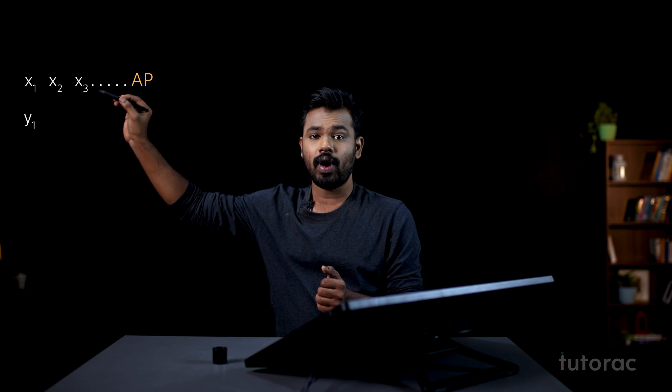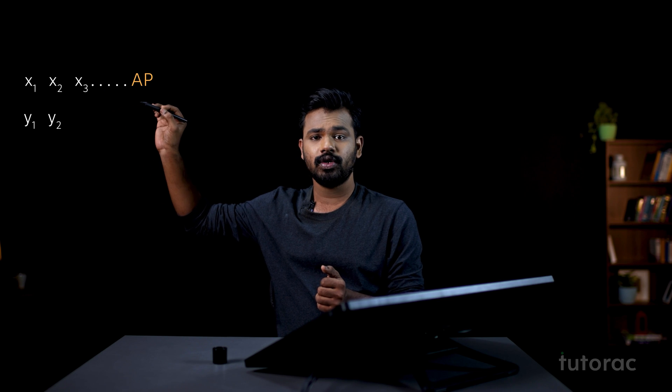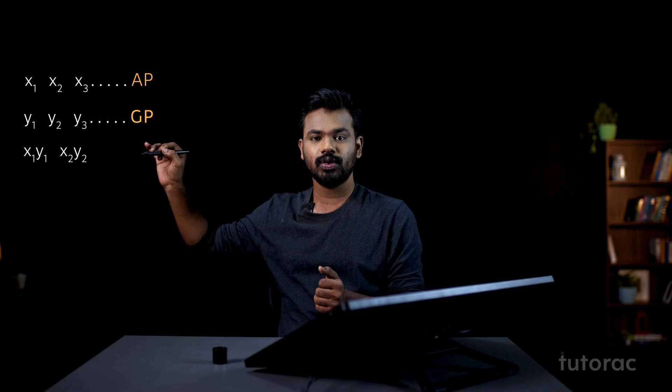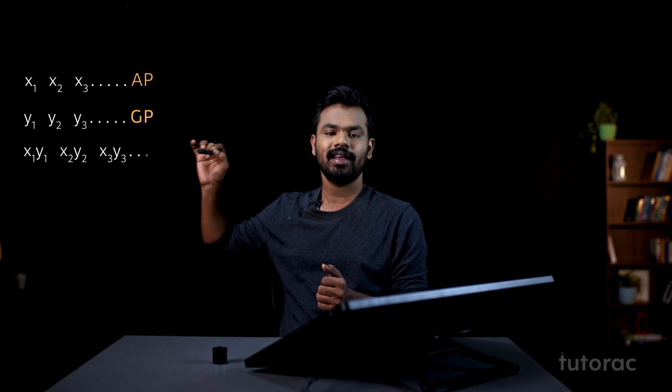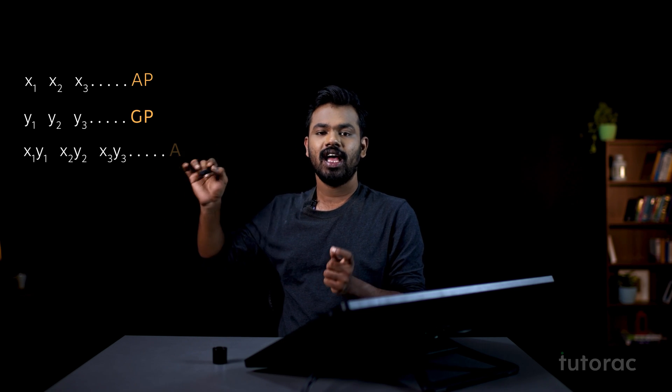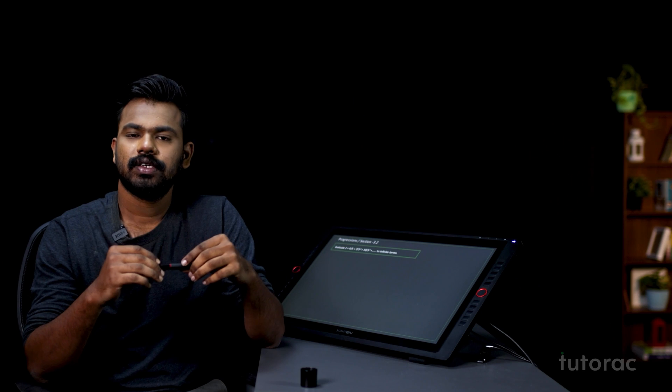If x1, x2, x3, etc. are in AP and y1, y2, y3, etc. are in GP, then the product x1·y1, x2·y2, x3·y3, etc. will be an AGP.